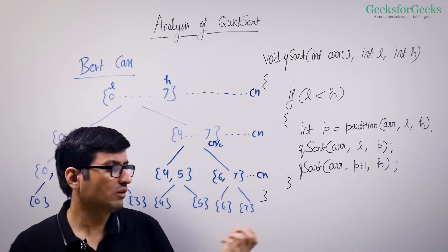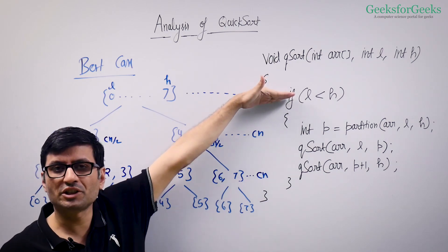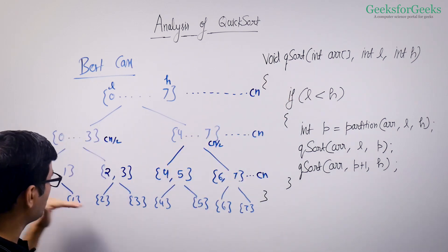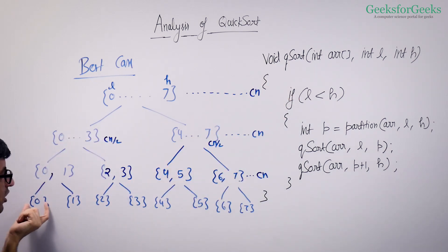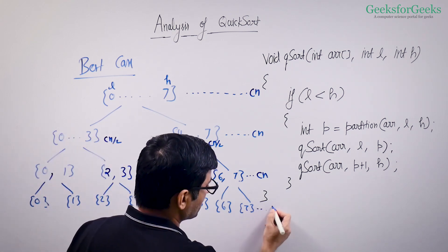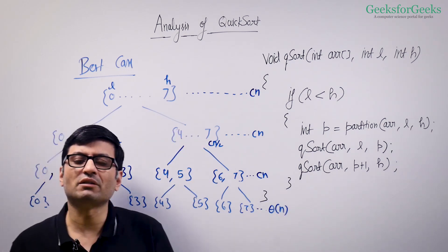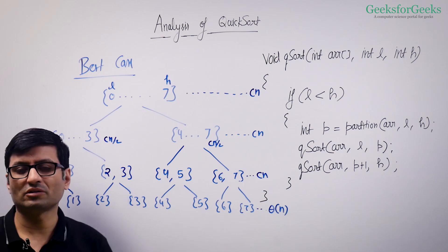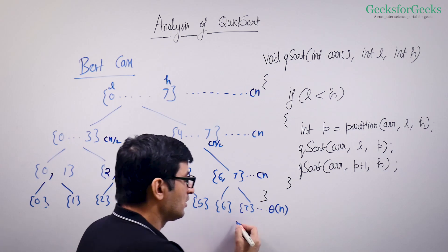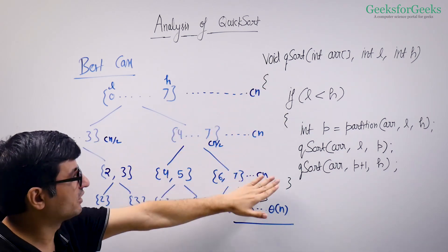Once single-element calls are made, you stop — that is your termination point, because you only go inside the if-condition when there are more than one elements. How much work are you doing at this leaf level? These are all constant operations — Theta(1) each. So you do Theta(n) work at this level: Theta(1) + Theta(1) + ... n times, which is Theta(n) work. What is the sum of all the work done across all levels?